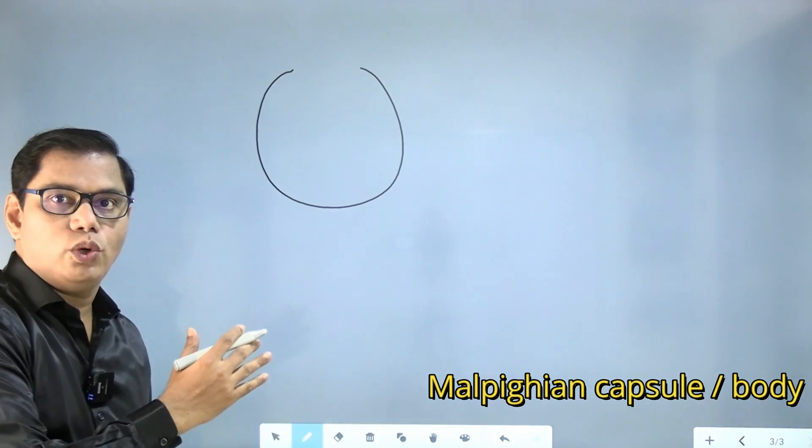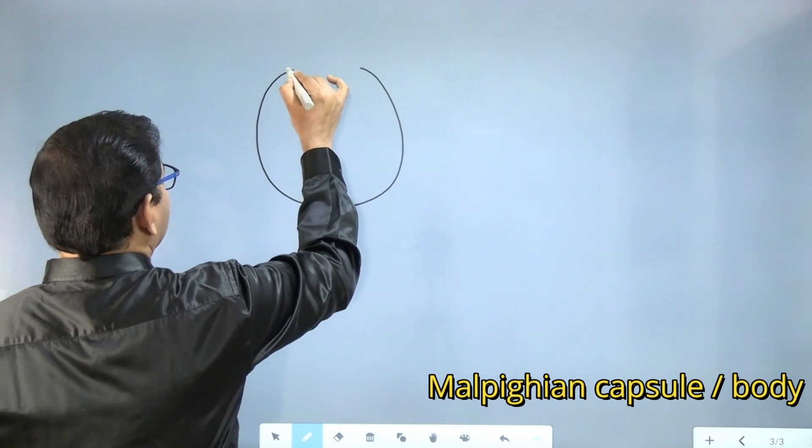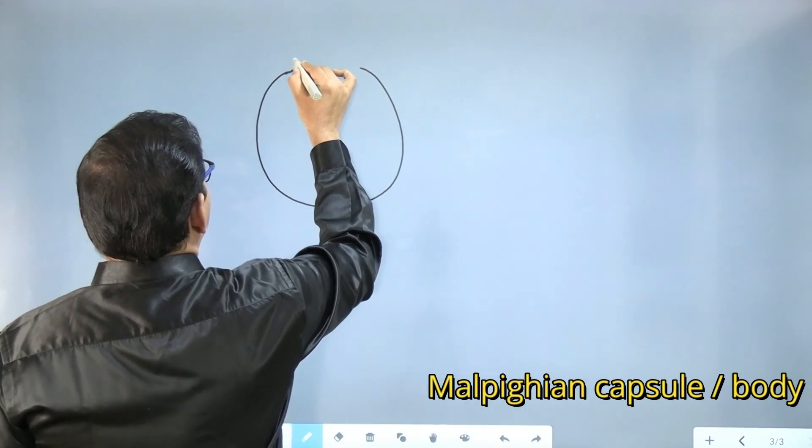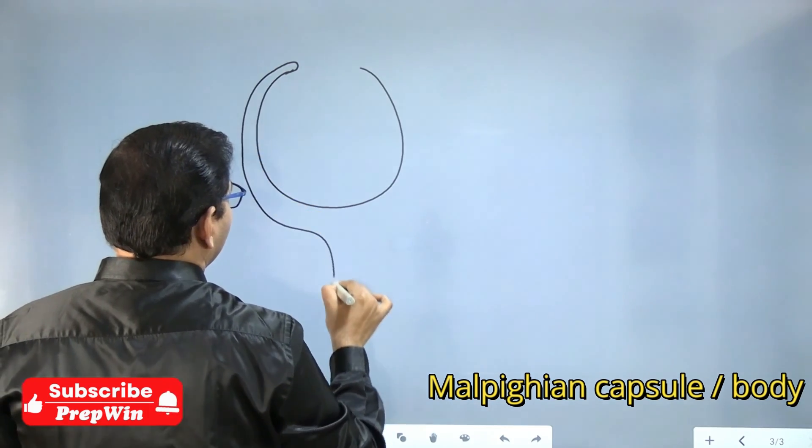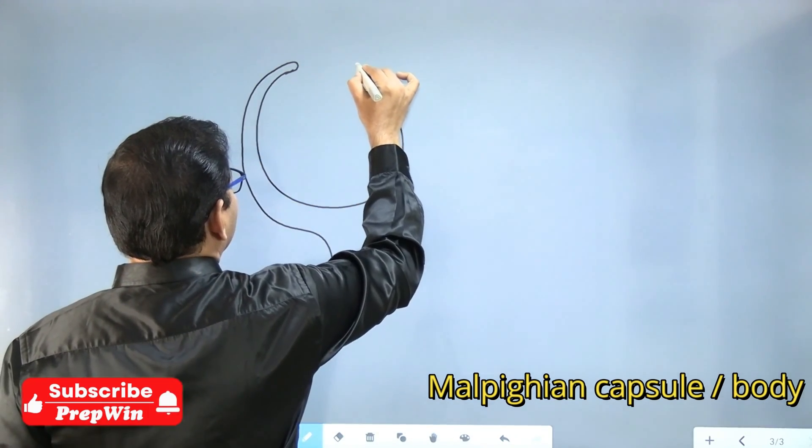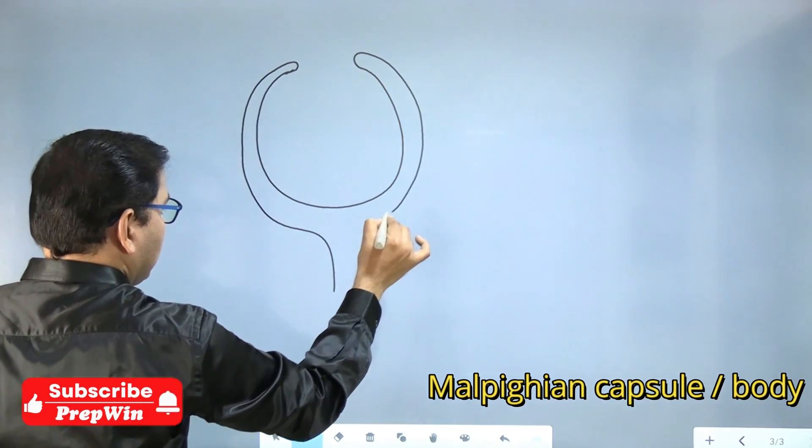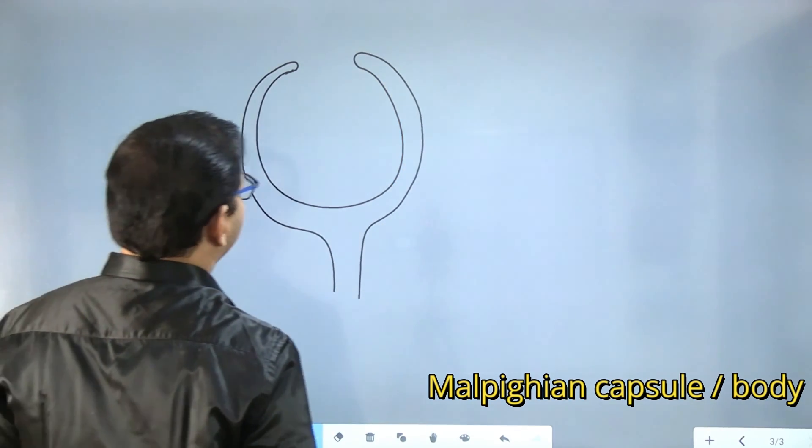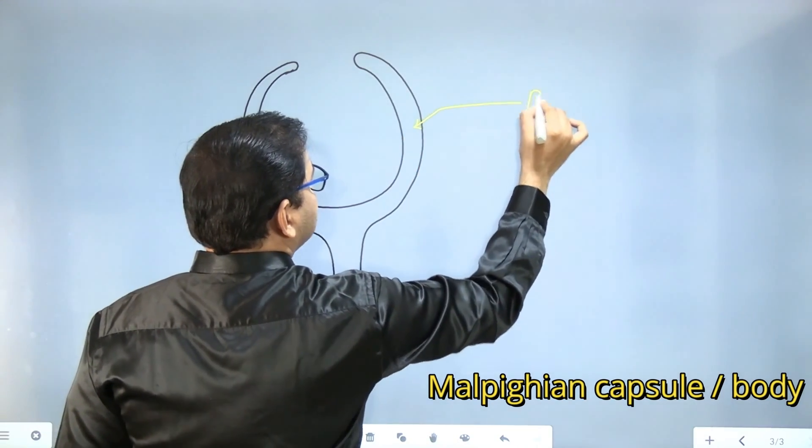First, you will draw almost something like a circle. Then here, try to keep a constant gap between two layers so that your diagram looks good. This part is called Bowman's capsule.